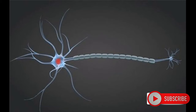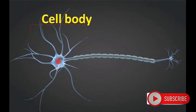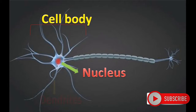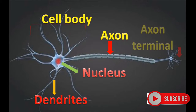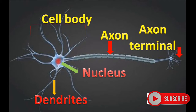It is made up of different parts: the cell body, which contains the nucleus at the center; dendrites, which are fibrous structures around the cell body; and the axon, which is an elongation from the nucleus having axon terminals.